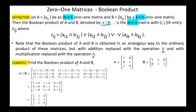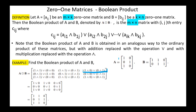Example: find the Boolean product of matrices A and B. The first entry is obtained by processing the first row with the first column: (1 AND 1) OR (0 AND 0). Entry A12 is obtained from the first row and second column: (1 AND 1) OR (0 AND 1). Entry A13 is from the first row and third column: (1 AND 0) OR (0 AND 1). We continue in the same manner for remaining entries.